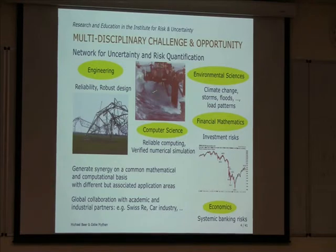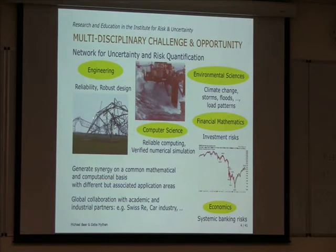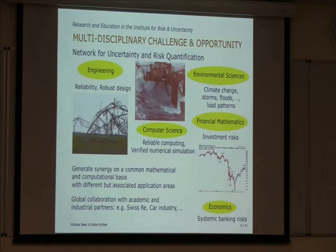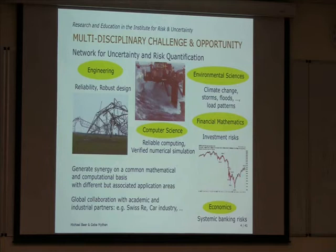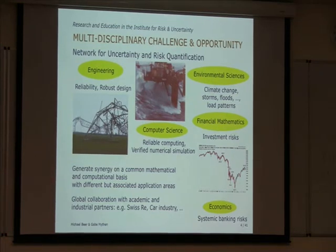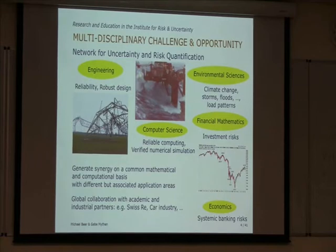We do this in global collaboration with academic and industrial partners — for example, Swiss Bay and car industry. They have specific issues in common which we can address with our tools in uncertainty and risk quantification. When we look at engineering structures — here we already have a collapse, and this one may collapse in the near future given those waves. Our question is: what happens when such a structure fails? It has consequences, like a breakdown of electricity supply to the population.